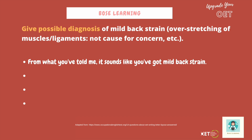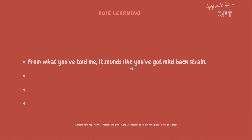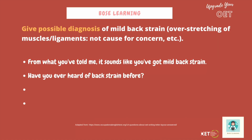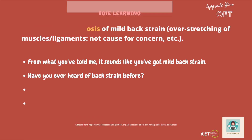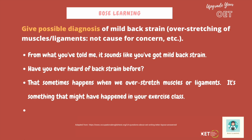Let me give you some suggestions about how you could tackle this. You could start by saying something like, 'From what you've told me, it sounds like you've got mild back strain.' So you're referring to what the patient has told you and then giving the possible diagnosis. Then ask, 'Have you ever heard of back strain before?' — check what the patient knows. They might be really familiar with this idea or it might be something completely new to them. You don't know, so just check. If they're not sure, you could explain: 'That sometimes happens when we overstretch muscles or ligaments — it's something that might have happened in your exercise class.'